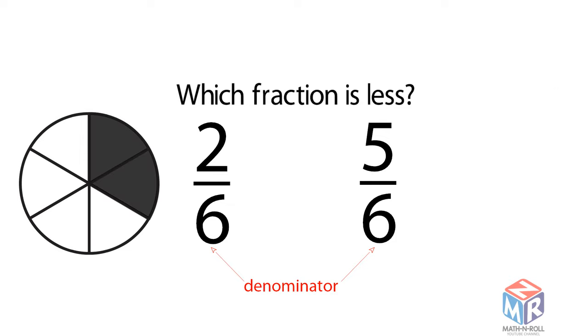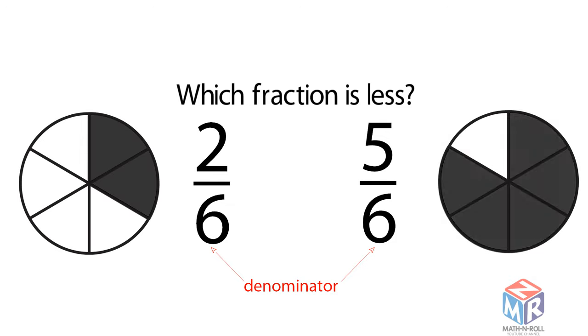2 out of 6 equal parts are colored. 5 out of 6 equal parts are colored. Both shapes have 6 equal parts and are the same size. So the parts in the first shape are the same size as the parts in the second shape.